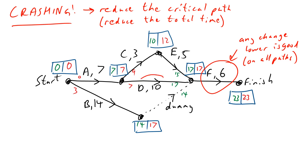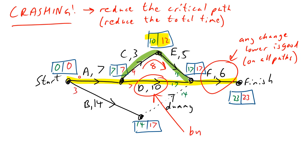Now let's look at D. Remember the green loop has a total of 8 and a float of two. Comparing the green loop (8) to the critical path through the middle (10 for D), you can change D by a maximum of two — you can crash D by a max of two, because that's the float on that particular route.